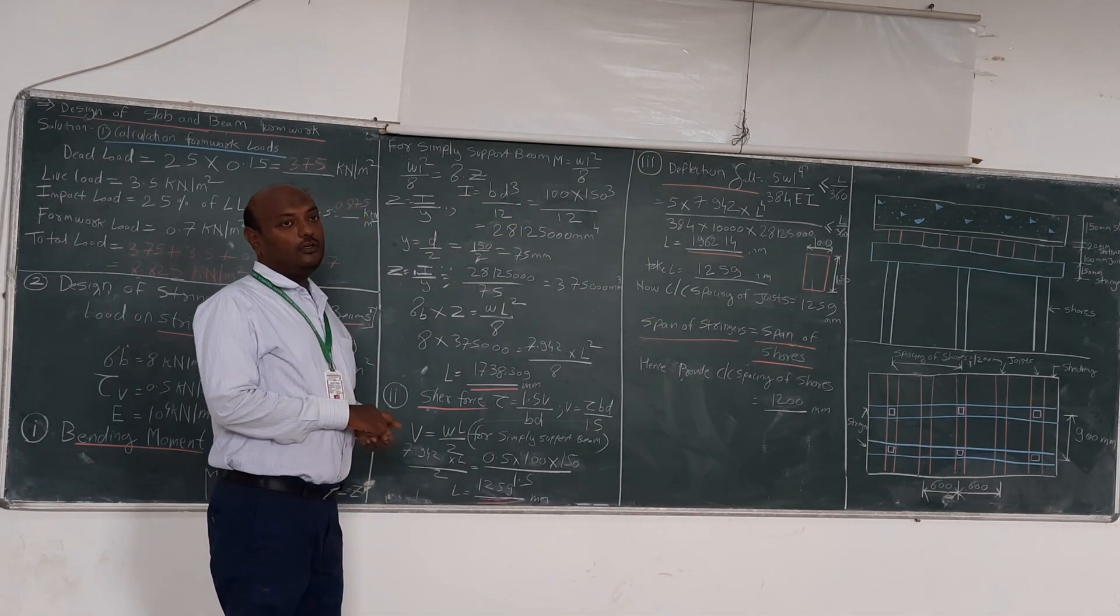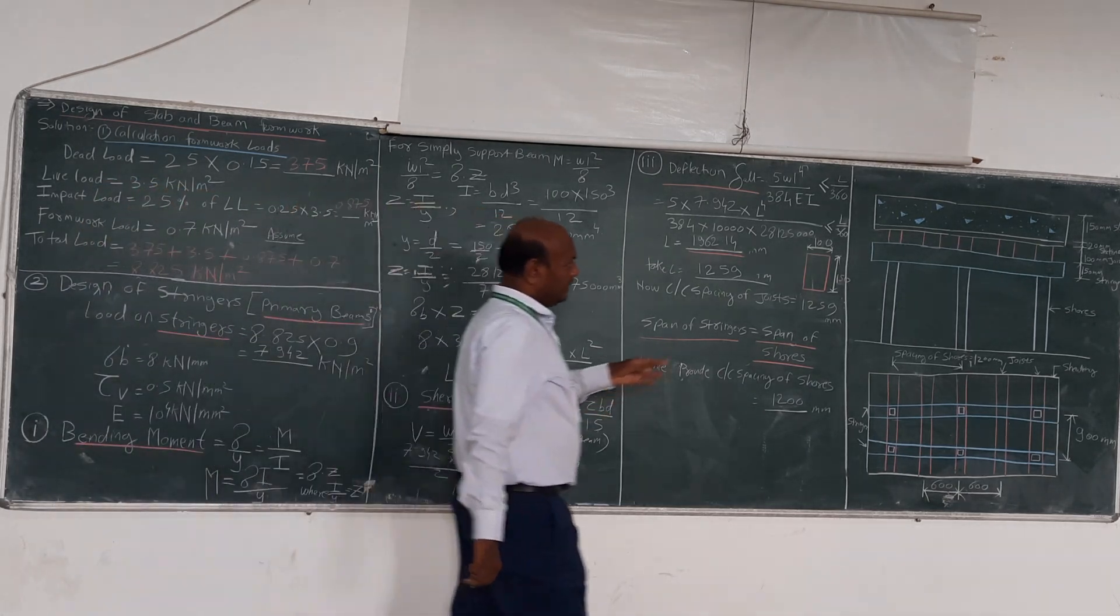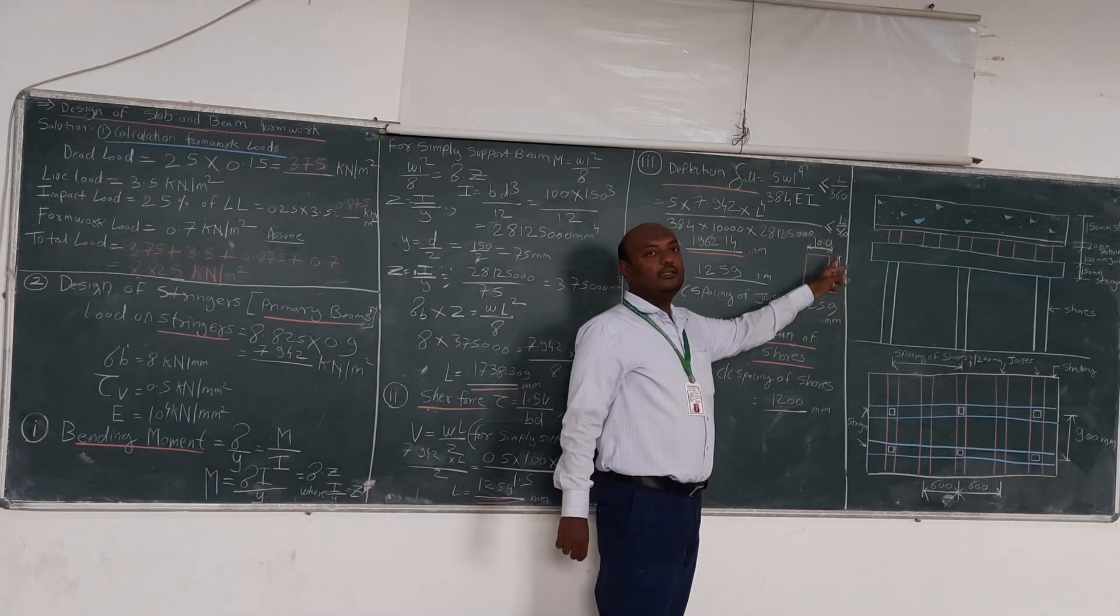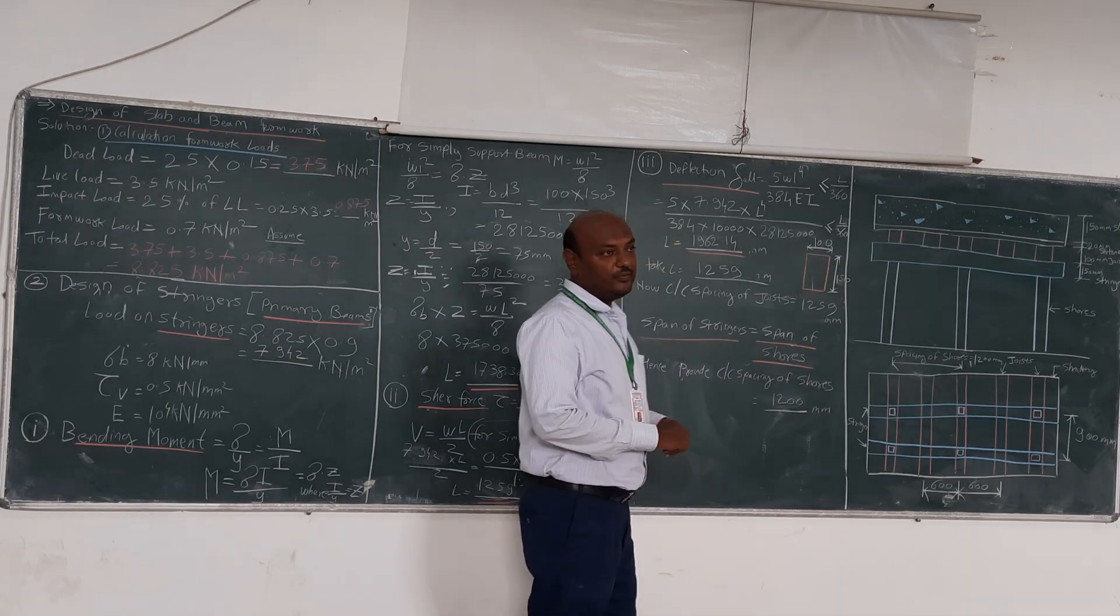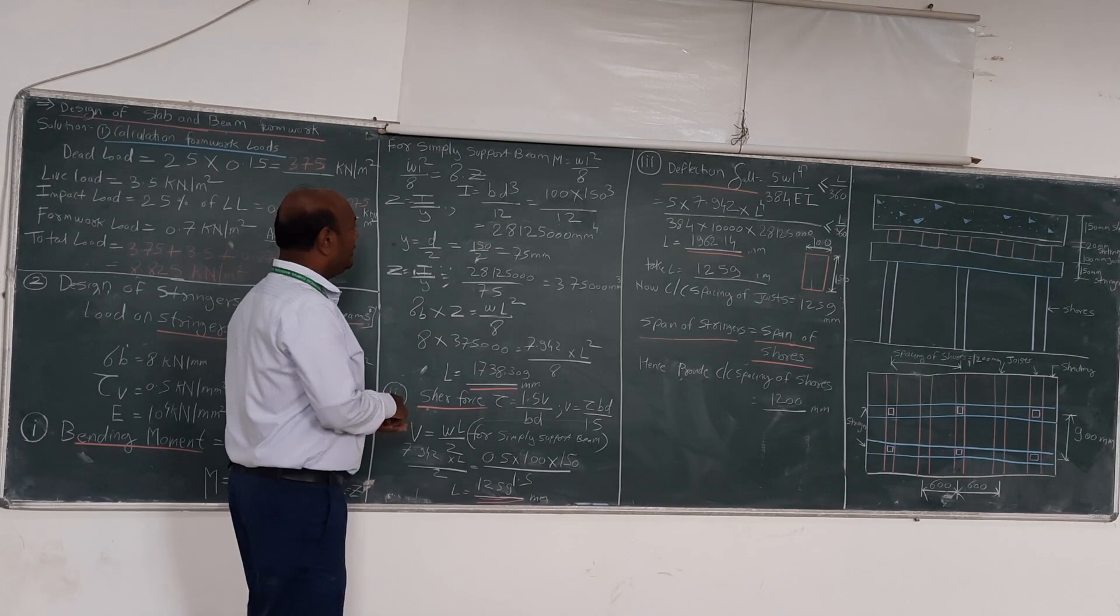Now here the size of the Stringer, which is given in the question, is 150 by 200. 150 by 200 is the size of the Stringer which is given in the question. Now we will find out the moment of inertia I.